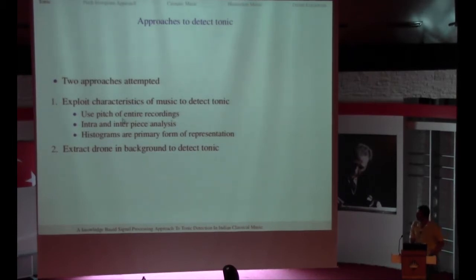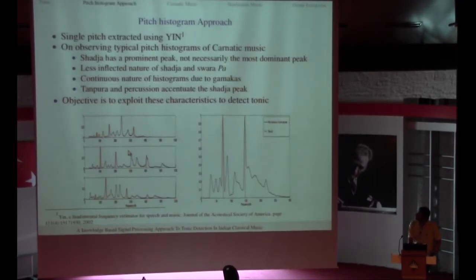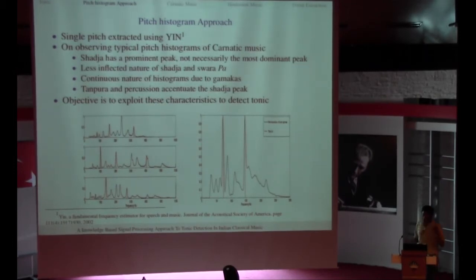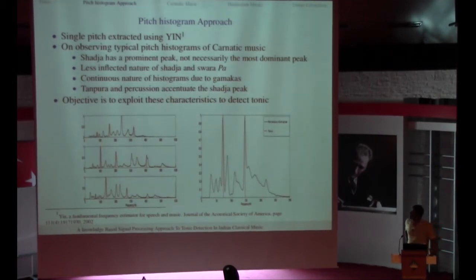Given that our first approach is to use the pitch of the entire recording, try to do some kind of intra and inter piece analysis. Histograms are the primary form of representation to detect my tonic. One of the main reasons why we are doing what we are doing here is we had a single pitch extraction method that is IN. Basically IN shows whatever is the prominent sound, pitch of the most prominent sound. So even if the drone is running throughout in the background, pitch of the drone is never shown by the IN extraction algorithm. So first what we did was we took a set of pieces and started plotting histograms and seeing how they look. You always saw the Sajja was prominent. It might not be the most dominant, but it definitely was a prominent peak. We also saw that the Sajja and Pappa, that is the fifth, were less inflected compared to the other nodes.